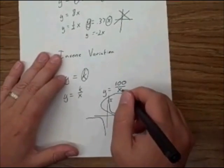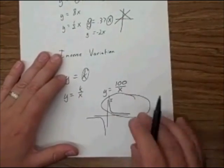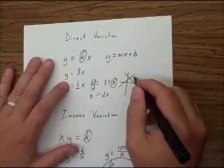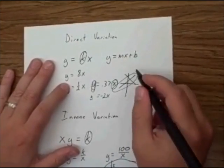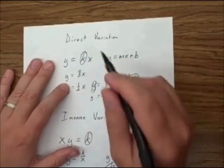And it's something that has to be divided by x, a number that has to be divided by x. The direct variation, it's going to be a straight line, and it's a number that's going to be multiplied by x.